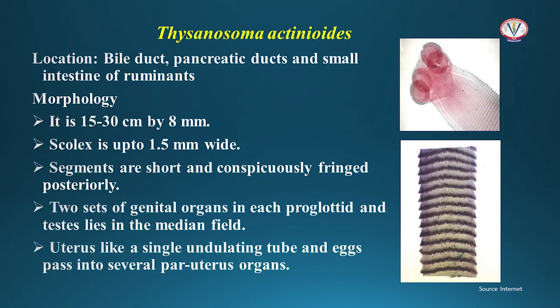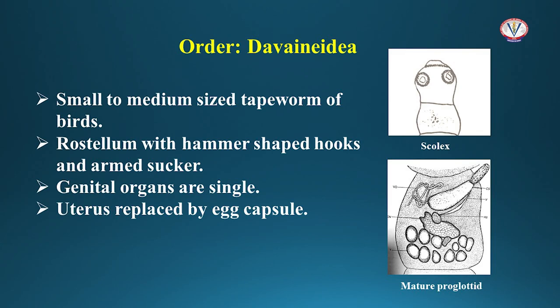Thysanosoma actinoides, the fringed tapeworm, is generally present in the bile duct, pancreatic duct, and small intestine of sheep, cattle, and deer. It is a medium-sized tapeworm, 15 to 30 centimeters long. The segments are short and fringed posteriorly. Two sets of reproductive organs are present in each mature proglottid, and the testes are generally in the median fields. The uterus is a single undulating tube, and eggs then pass into several para-uterine organs. Order Davineida contains small to medium-sized tapeworms of birds. They have a rostellum with hammer-shaped hooks and armed suckers. The genital organs are single and the uterus is replaced by egg capsules.